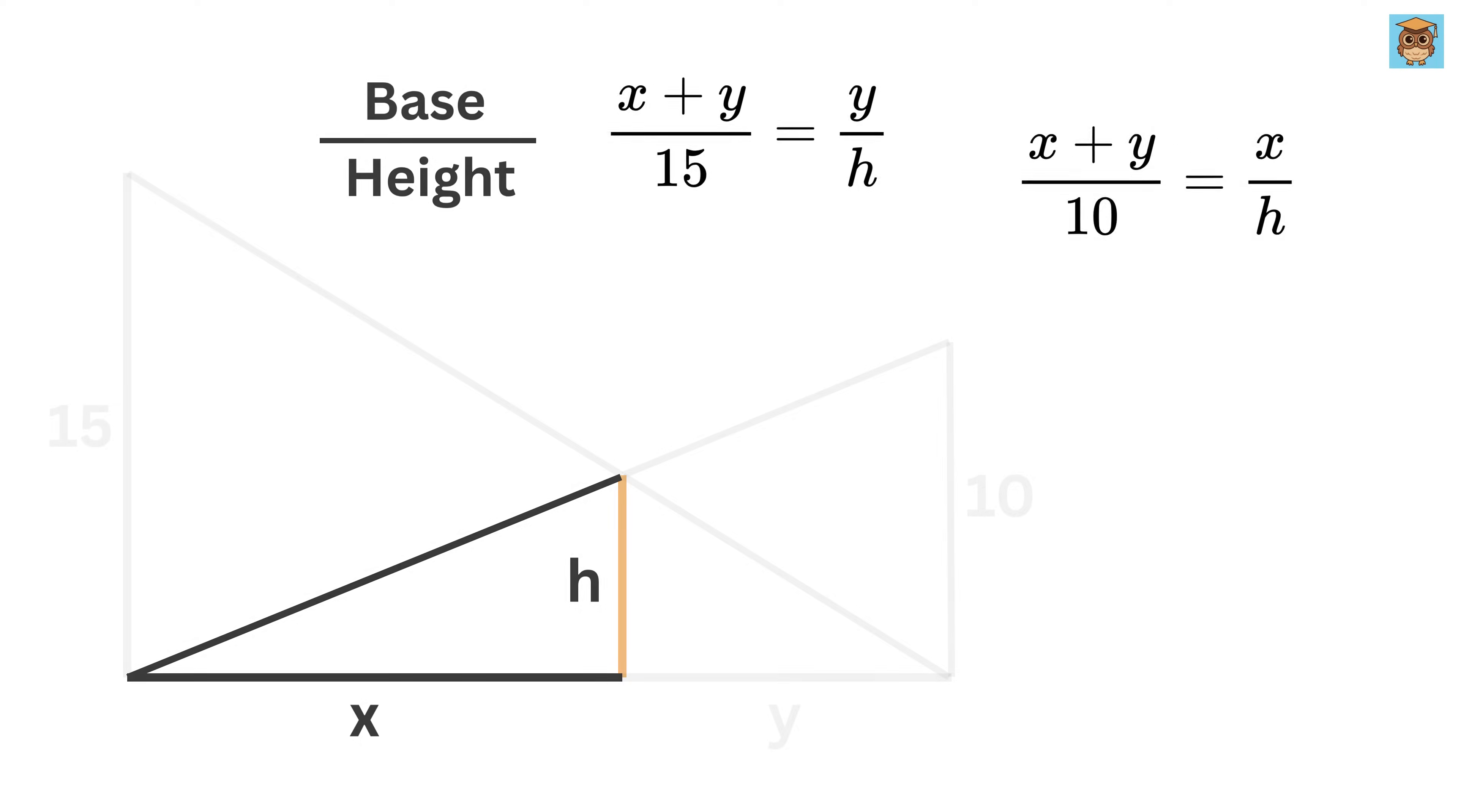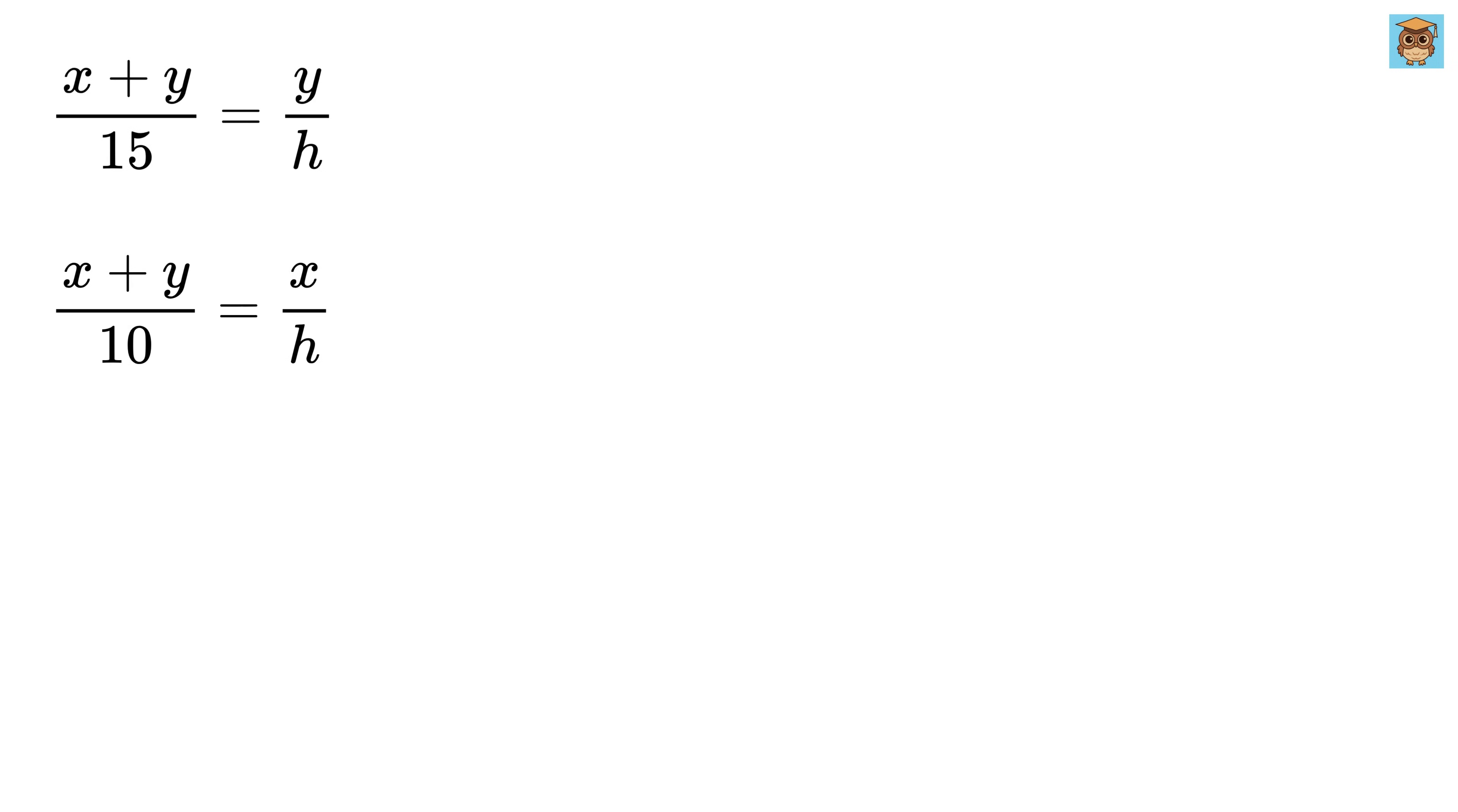Now, here comes the magic. Add both these equations. We get X over H plus Y over H equals X plus Y over 15 plus X plus Y over 10. The left-hand side becomes X plus Y over H, since both terms have the same denominator.